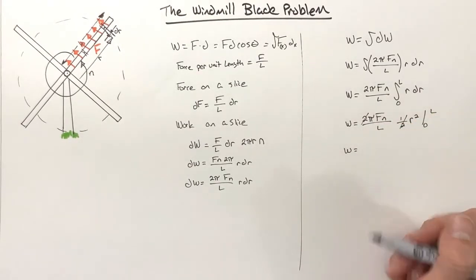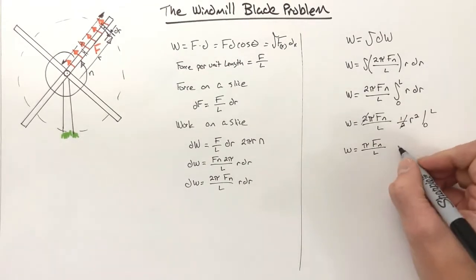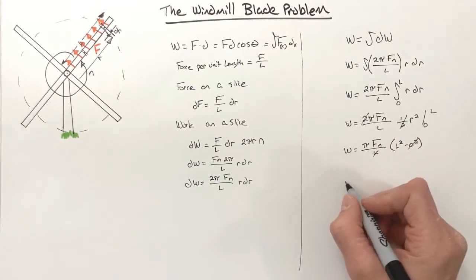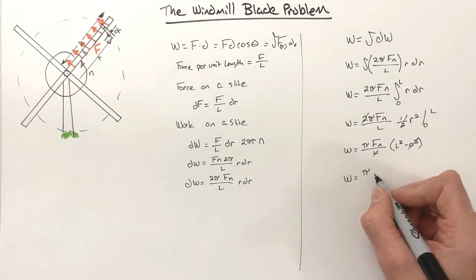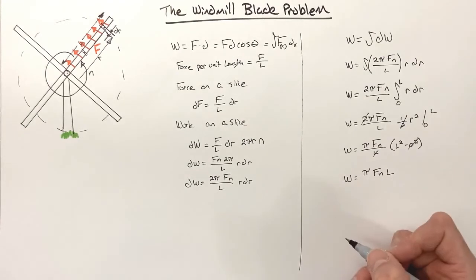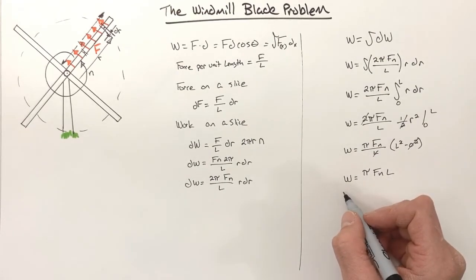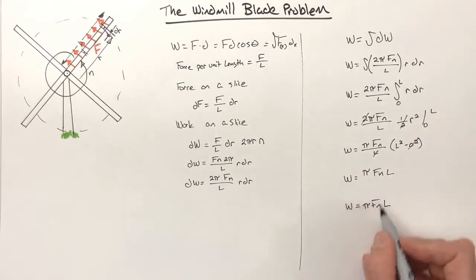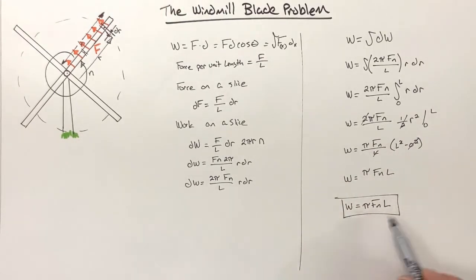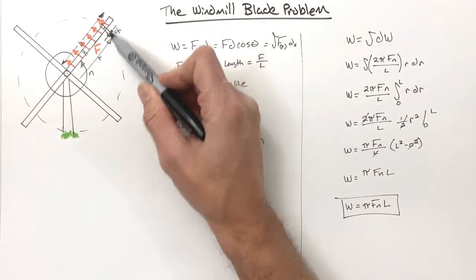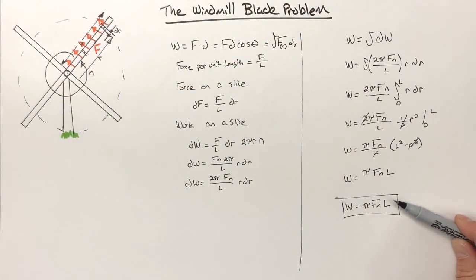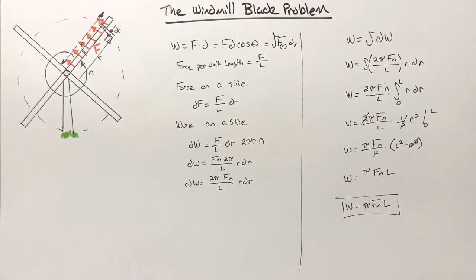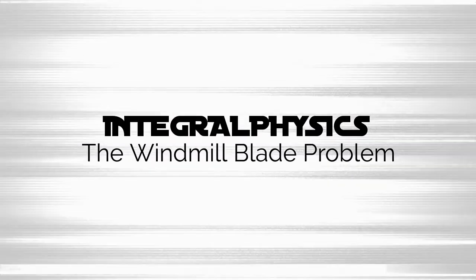The 2 in 2πFn/L cancels with the 1/2, and L² from the upper limit minus 0² from the lower limit gives L². After the remaining L in the denominator cancels one power of L², we get the total work: W = π·F·n·L. That is the solution to the windmill blade problem.